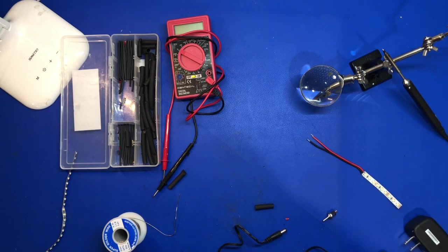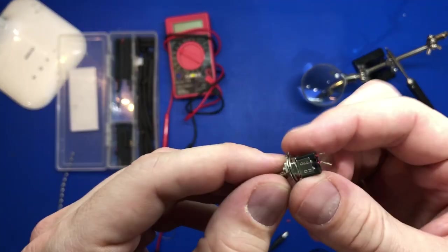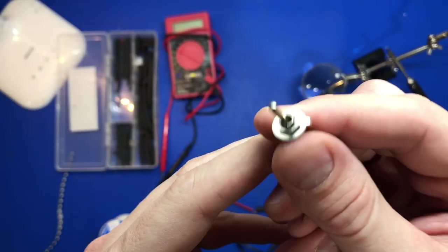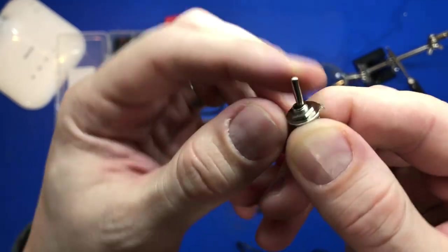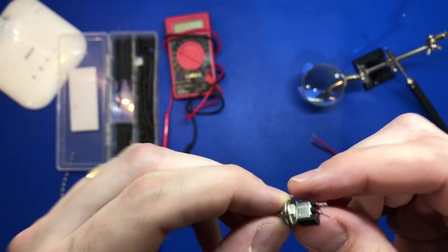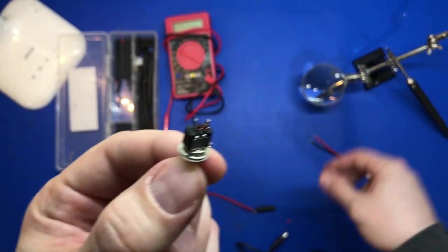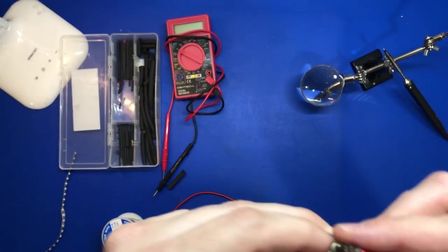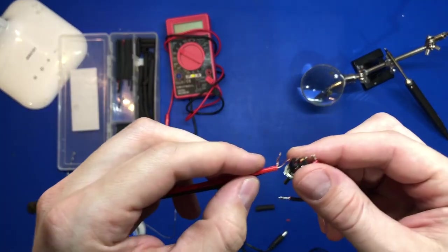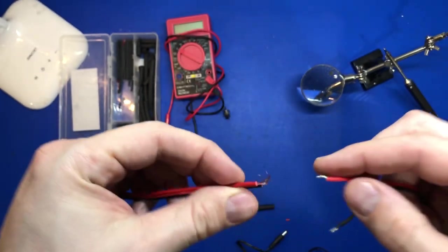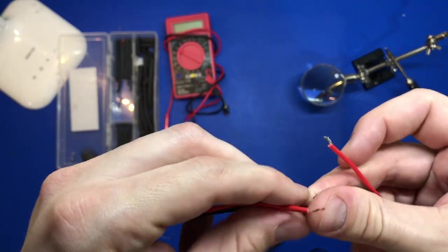One thing I thought would be cool, and we'll get back to our regular story, is what if we had a switch on there, right? Like what if we could just go on our turntable and do this and turn the light on and off? There's a lot of different switches out there. This one's super straightforward. All you're going to do is plug one of these red pieces into here and the other into the other side, and it's just going to connect and disconnect the red part.